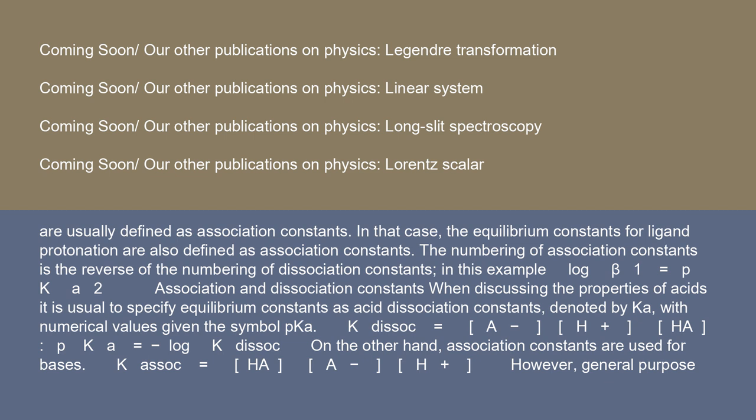When discussing the properties of acids, it is usual to specify equilibrium constants as acid dissociation constants, denoted by Ka, with numerical values given the symbol pKa. K_dissoc = [A⁻][H⁺]/[HA], and pKa = -log K_dissoc.